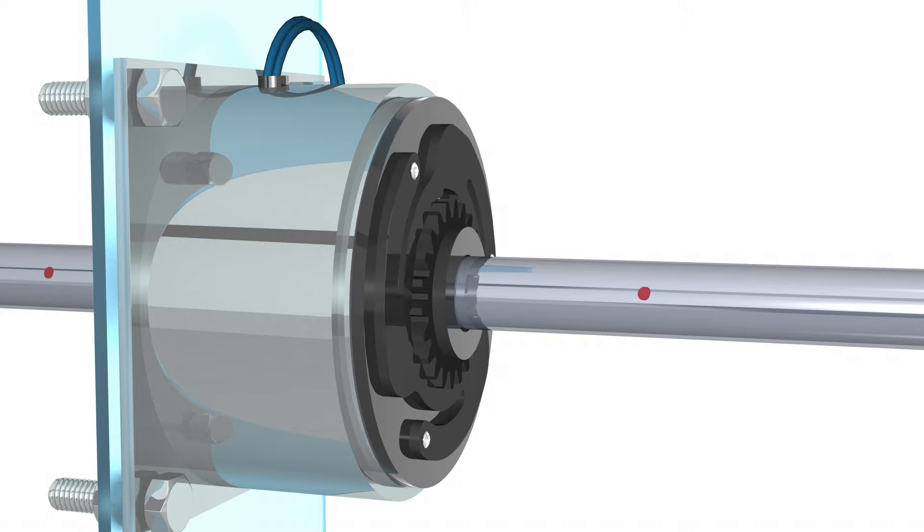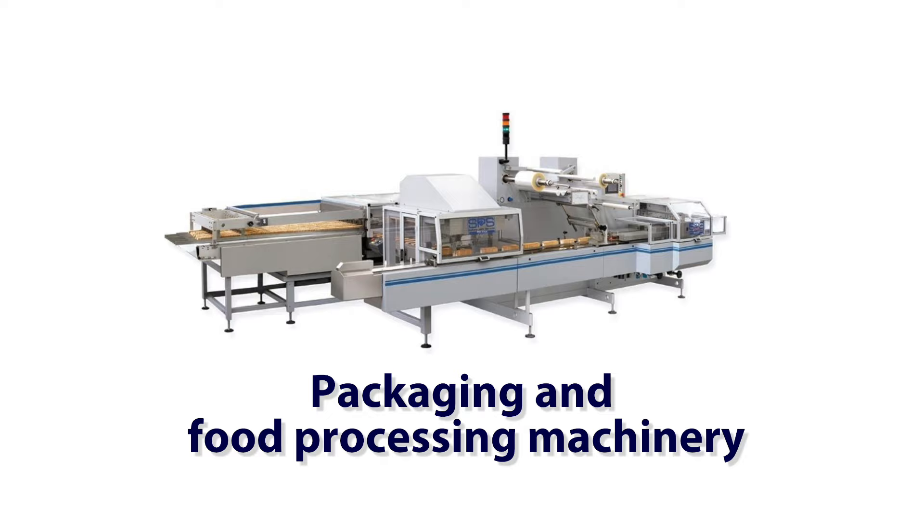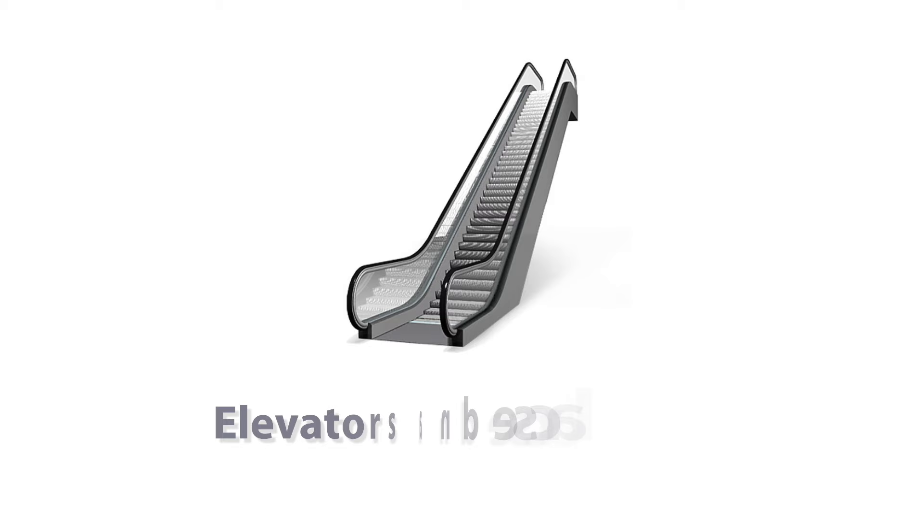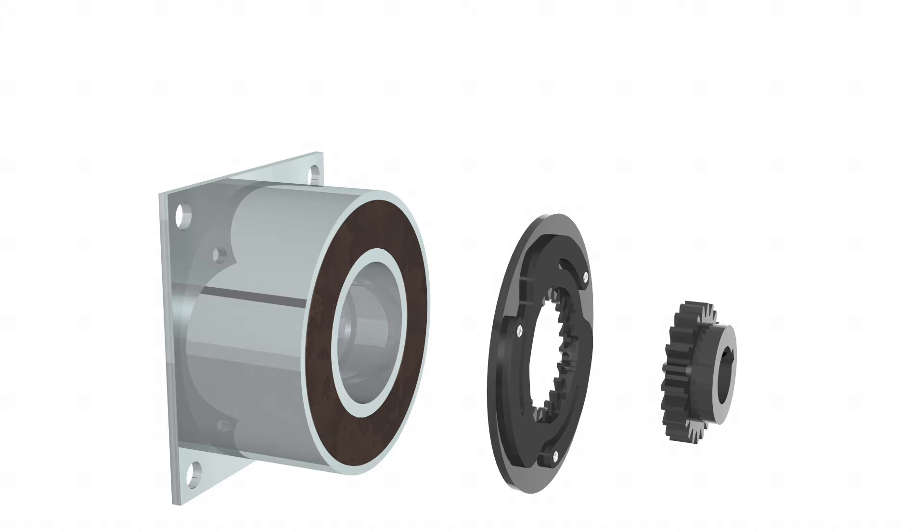Electromagnetic brakes can be found in almost any application that requires the holding or stopping of rotary motion. Typical applications are packaging and food processing machinery, medical equipment, servo motors and robotics, and elevators and escalators.